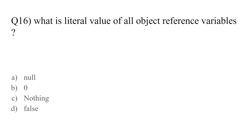Question number sixteen: what is the literal value of all object reference variables? Just like true and false are literal values for boolean, the options here are null, zero, nothing, or false. The answer is A — null. If you do not assign a value to an object reference variable, Java will by default make it point towards null.